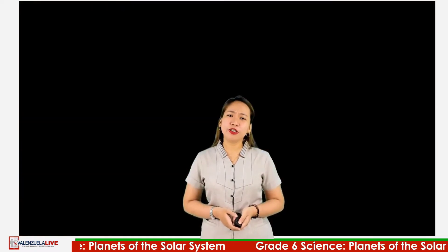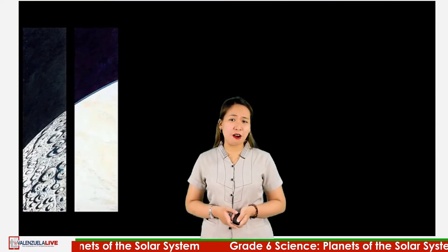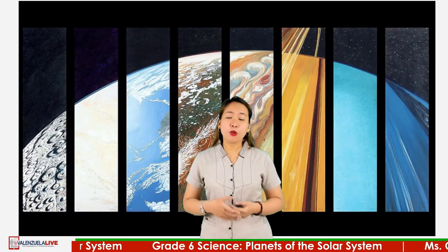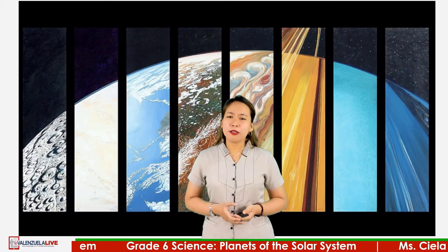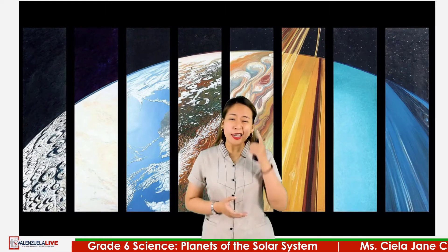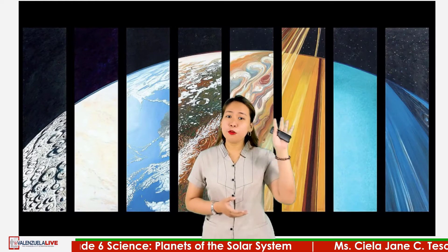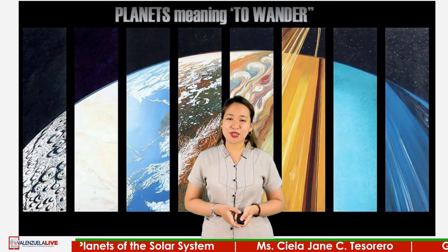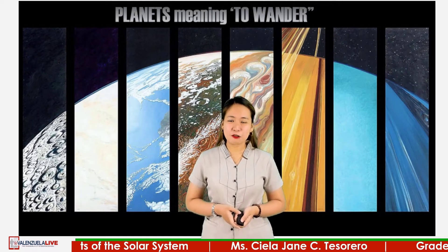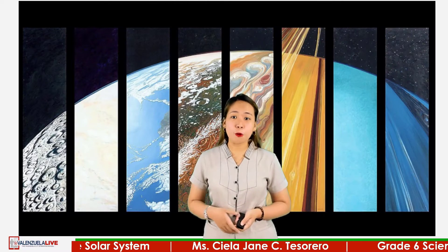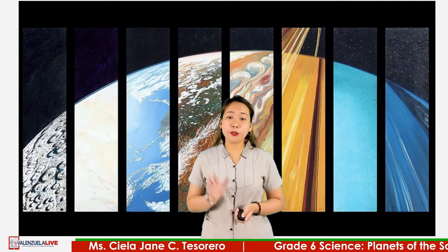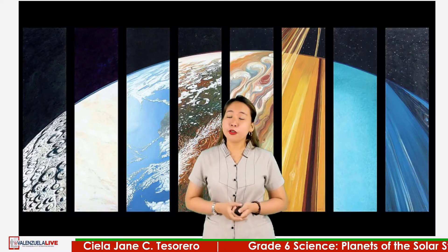Have you ever wondered how planets were discovered? Long time ago, five planets were known to people. They are bright enough to be seen with the naked eye and they move with respect to the stars. The Greeks called these planets, which means 'to wander.' People from other places have their own names for these planets, but the names we use come from the ancient Greeks and Romans. They named the first five planets for some of their gods.